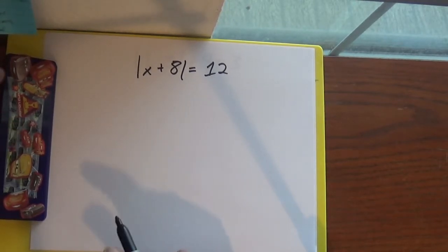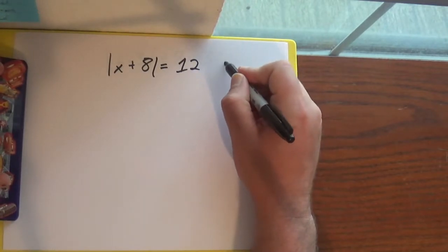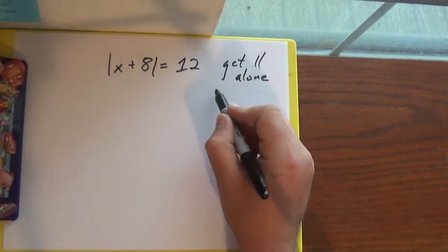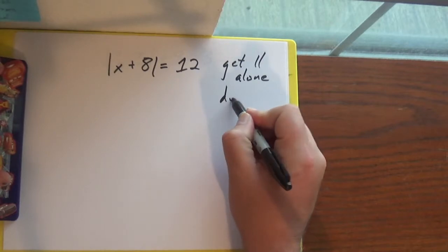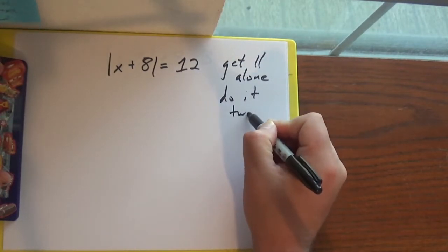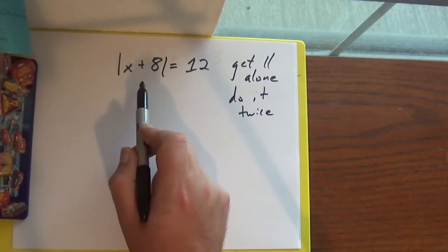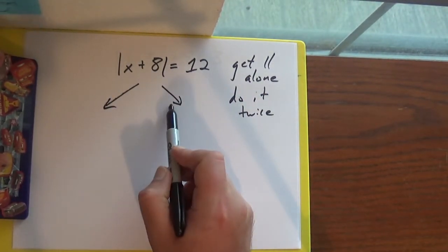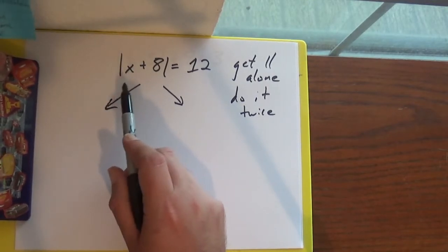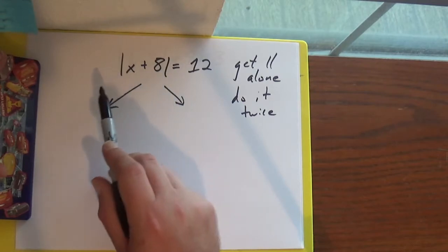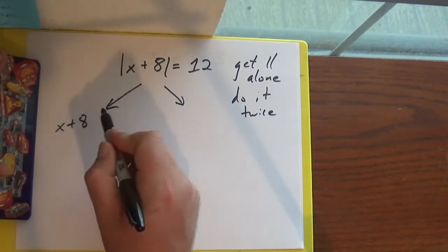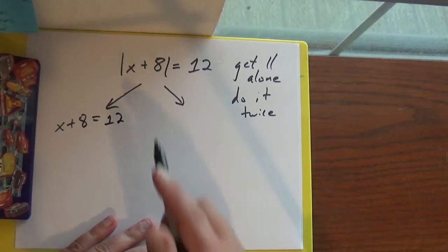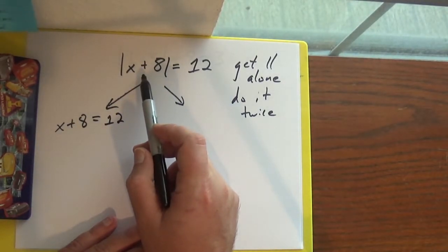So on this one, the steps: we want to get the absolute value alone, and then we're going to do it twice. Right now my absolute value is already alone, so what I'm going to do is break this into two cases — the 'does nothing' side and the 'does something' side. On the 'does nothing' side I'm just going to get rid of my absolute value and write the equation without it.